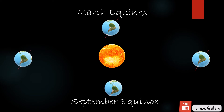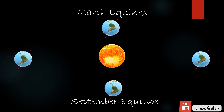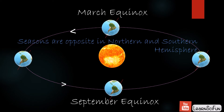From March equinox to September equinox, the northern hemisphere tilts towards the Sun, which means it receives longer hours of daylight than the southern hemisphere. This results in hot season in the northern hemisphere and cold season in the southern hemisphere — like winters in Australia and summers in India.